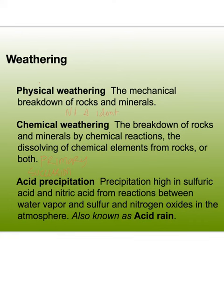Acid precipitation is precipitation high in sulfuric acid and nitric acid, from reactions between water vapor and sulfur and nitrogen oxides in the atmosphere — this is acid rain. We're talking about things that are out of the ordinary from human interaction, not just carbonic acid from CO2, which happens naturally. Remember that acid rain directly contributes to chemical weathering of minerals.